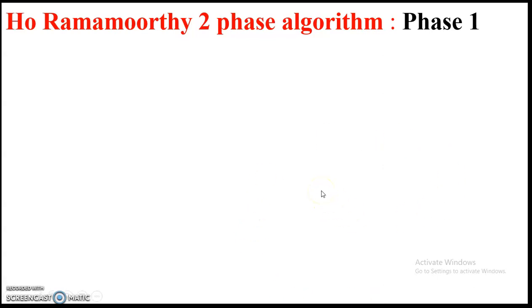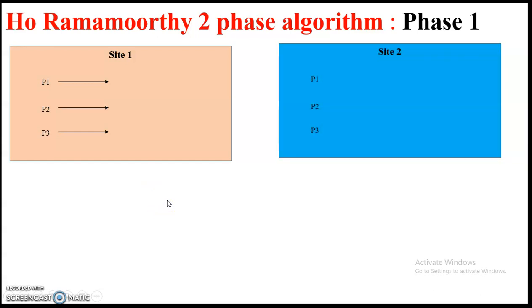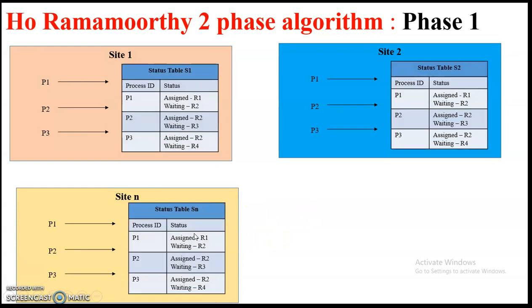There are multiple sites in distributed systems and these sites have multiple processes that are executing. Each site will maintain their own status tables. These status tables will have two fields: process ID and the status. The process ID is the process itself and the status is to which process a resource has been assigned or for which resource the process has been waiting. All this information is stored in these status tables.